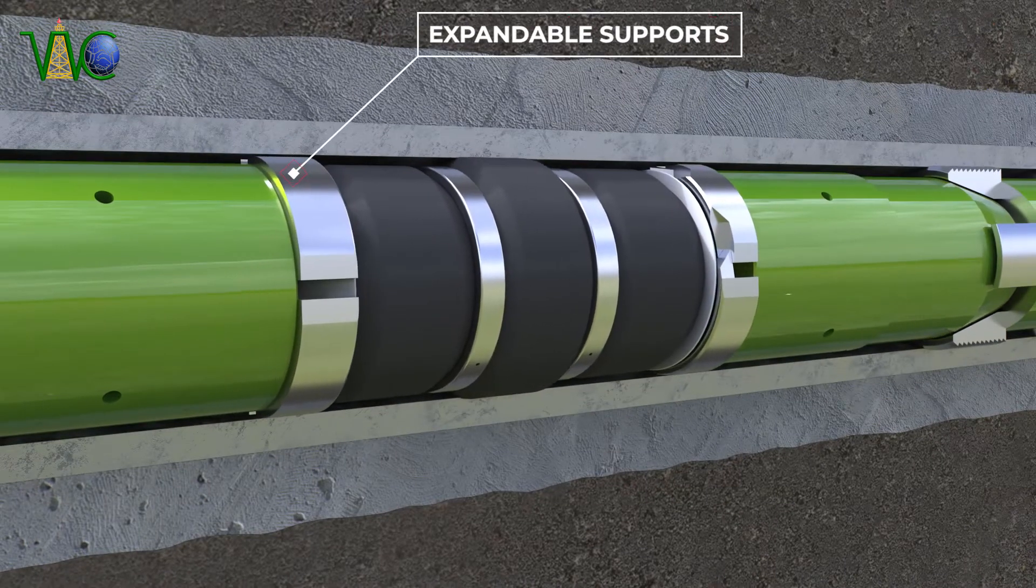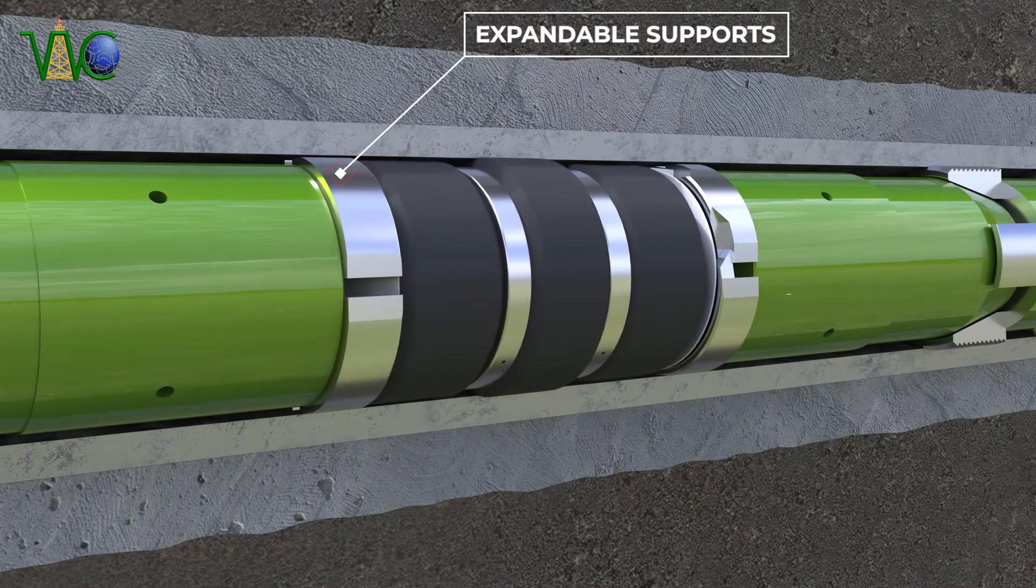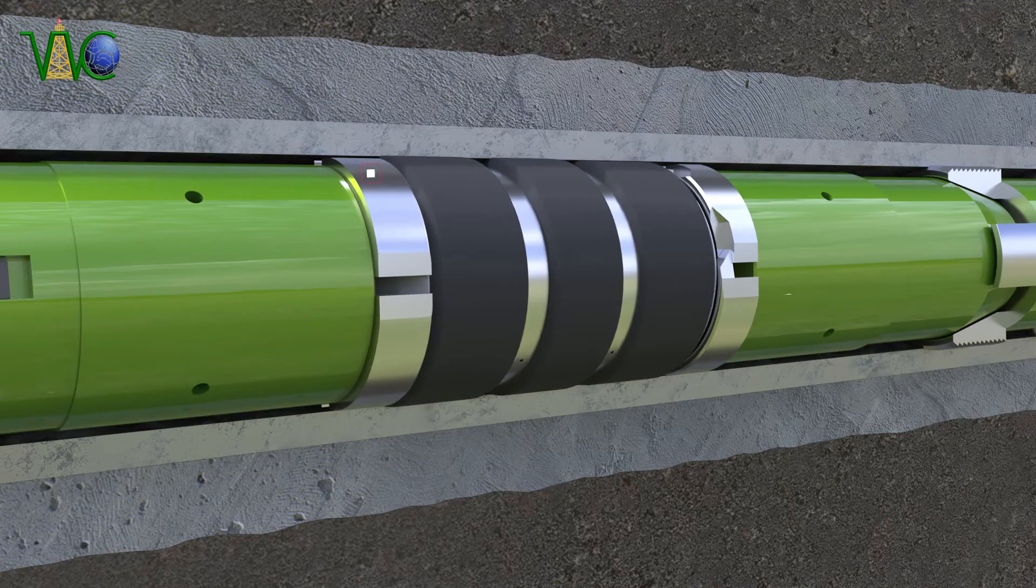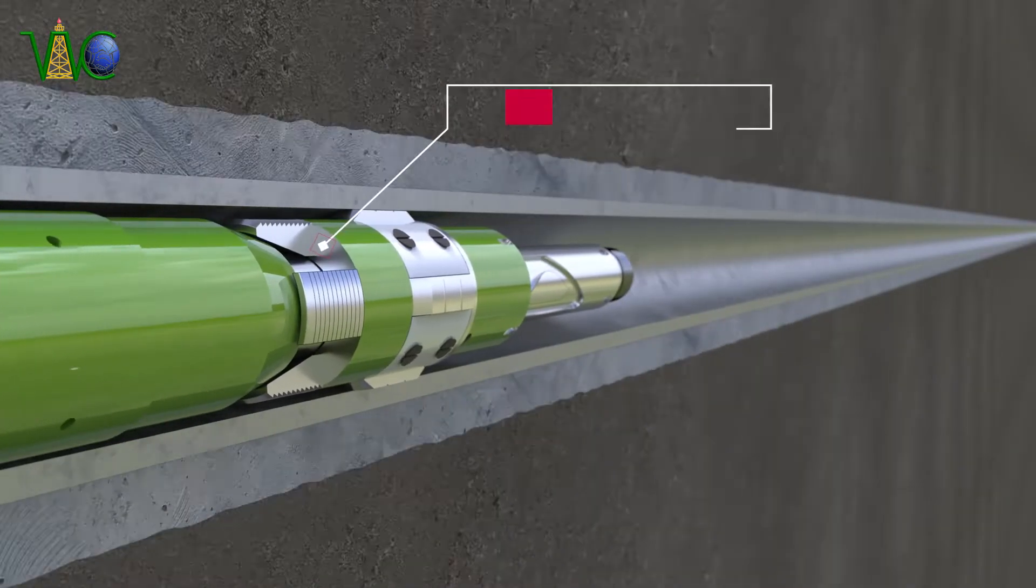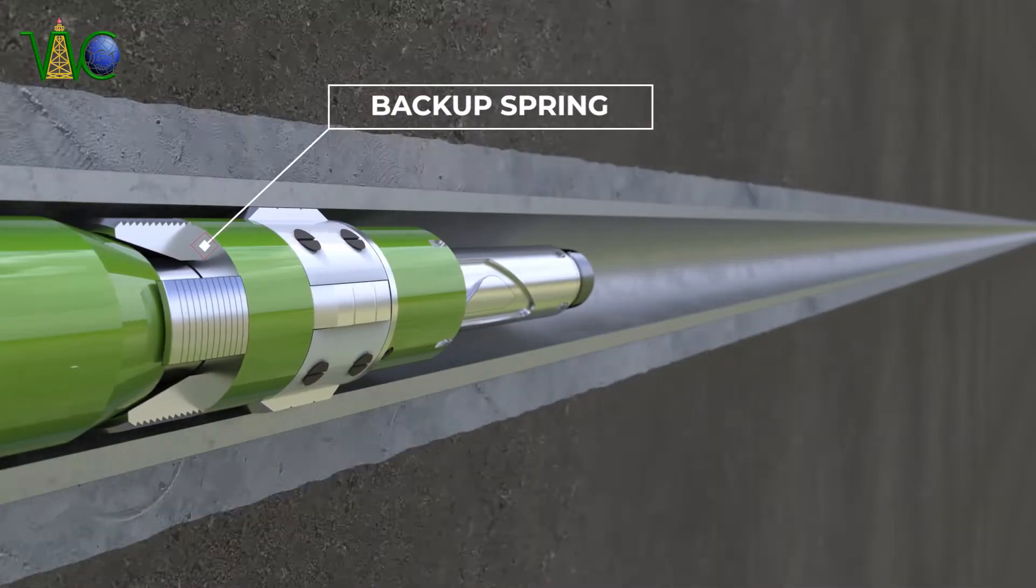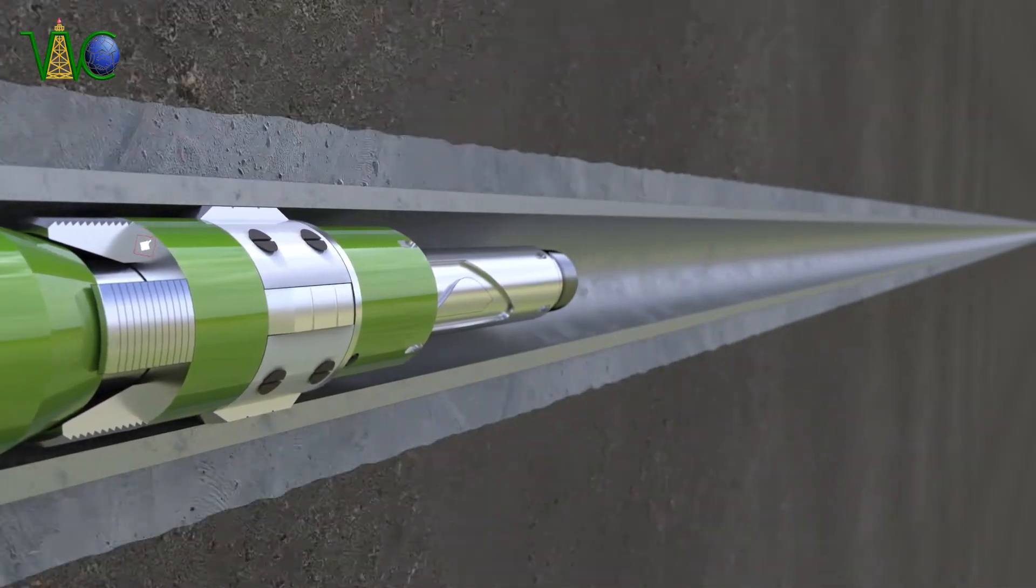Packing elements are surrounded by expandable supports which decrease the extrusion gap. The backup springs behind lower slips keep them intact with the mandrel, thus stopping them from biting the casing during running in.